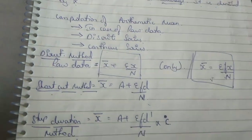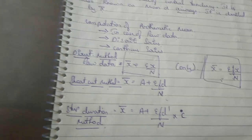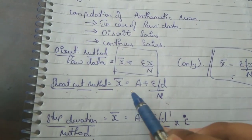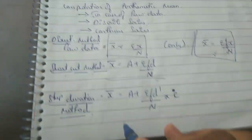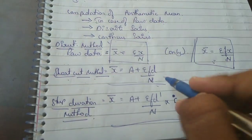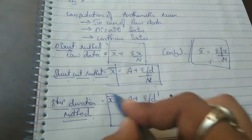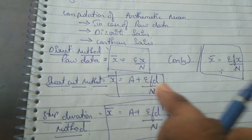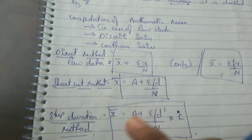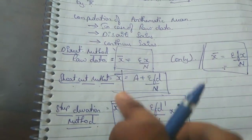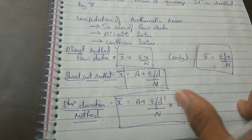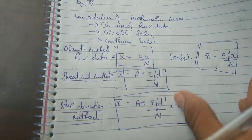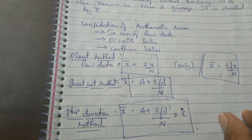For the shortcut method the formula is: x-bar = A + (Σfd / n). For the step deviation method the formula is: x-bar = A + (Σfd' / n) × c. These are important formulas — note them down and memorize them.